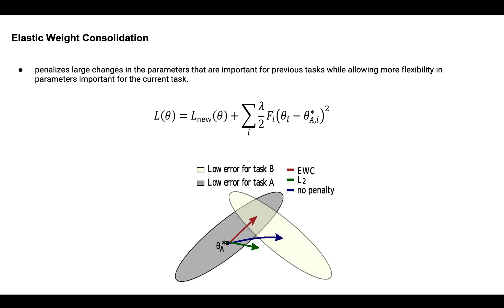Theta here represents the current values of the weights, theta star is the optimal value of the weights for the previous task, and lambda is a hyperparameter that controls the strength of the penalty.